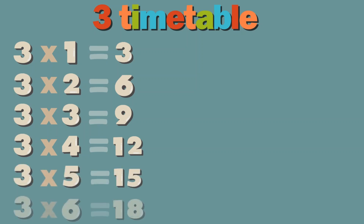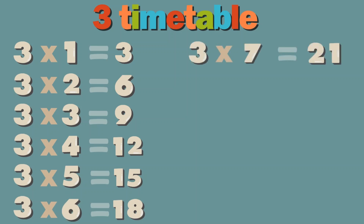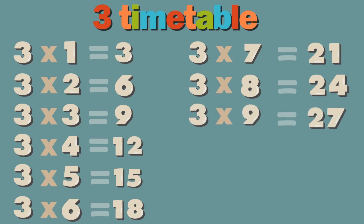3 times 6 equals 18. 3 times 7 equals 21. 3 times 8 equals 24. 3 times 9 equals 27. 3 times 10 equals 30.